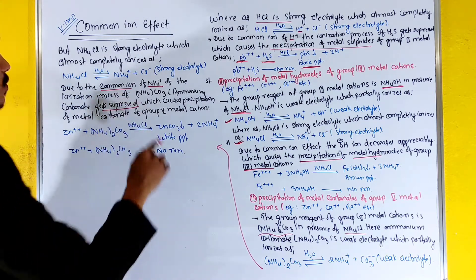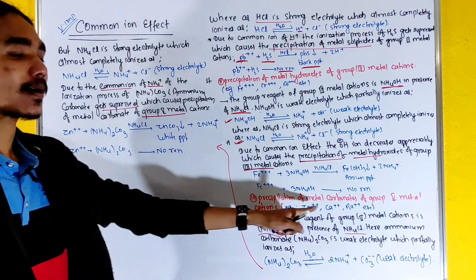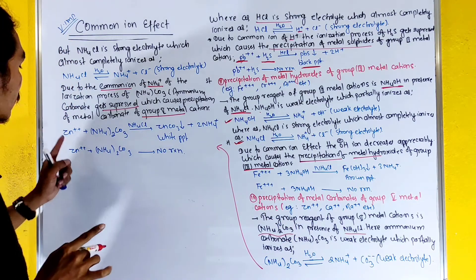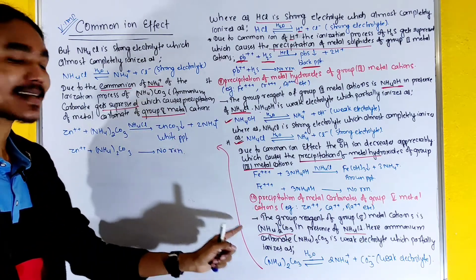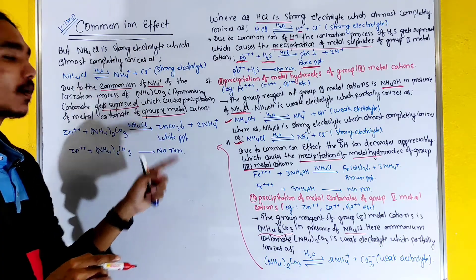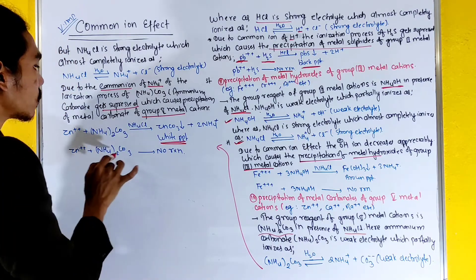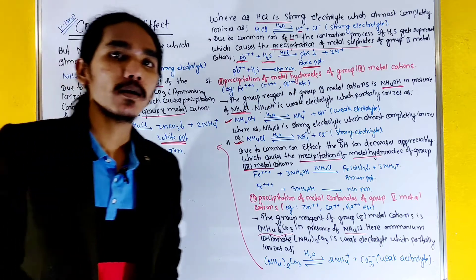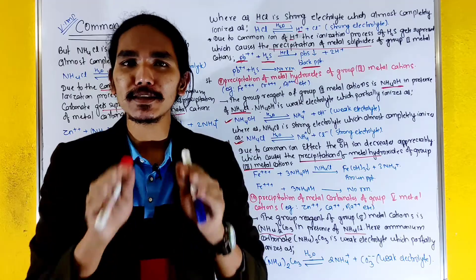The next application is the precipitation of metal carbonates of group 5 metal cations, such as zinc. The group reagent used is (NH₄)₂CO₃ in the presence of NH₄Cl, which causes the selective precipitation of metal carbonates of group 5 cations.